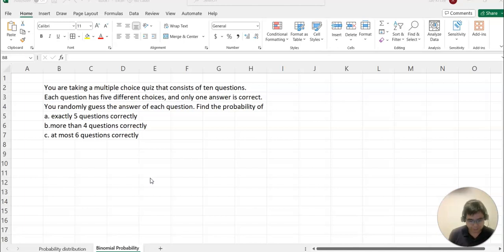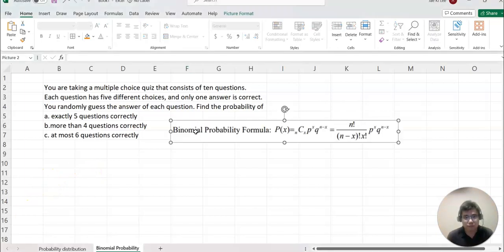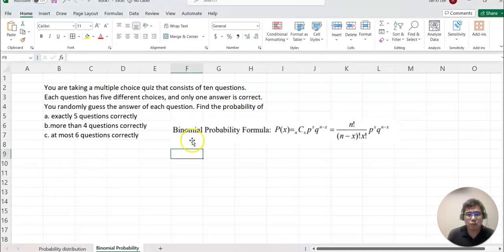We need to organize our total number n and then case number x. Please look at this formula. Binomial probability formula means P(x) equal to nCx times p to the x power times q to the n minus x power.